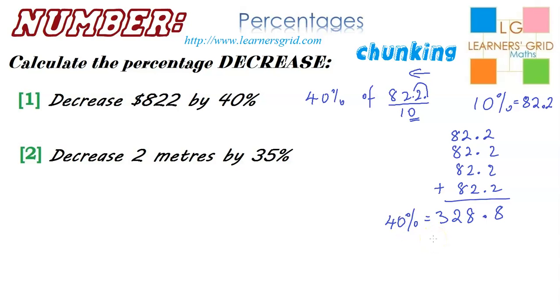It's 328.8. And I just now need to subtract that amount from 822, which was the original amount. Let's do that. 822 minus 328.8. Now, there's no zero here, so I'll put a zero here, put a decimal point here, and now we can do it. 0 minus 8 we can't do, so we need to borrow. That's going to be 10 minus 8 is 2.